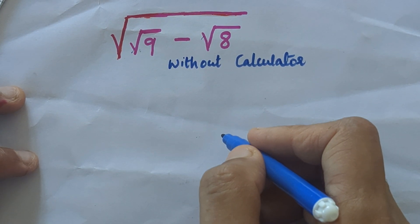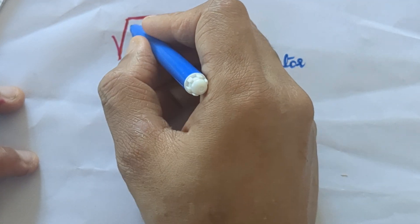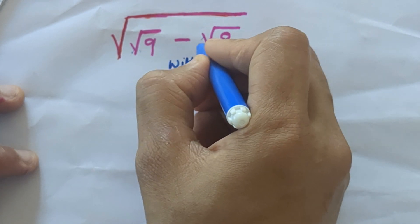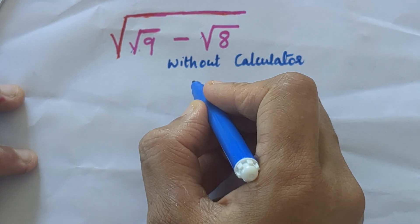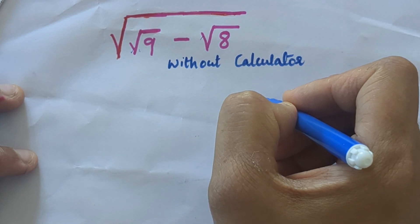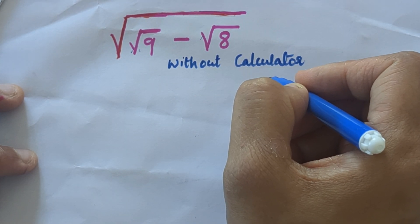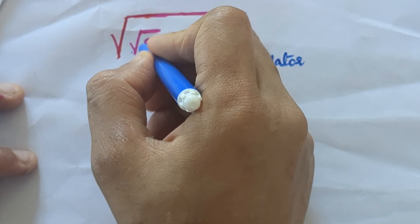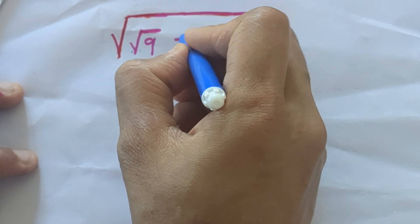Hello everyone, our question is square root of root 9 minus root 8. We have to find the square root without using a calculator. Root 9 is easy, it's a perfect square, that's 3. But 3 minus root 8, it's difficult to find the value of root 8.